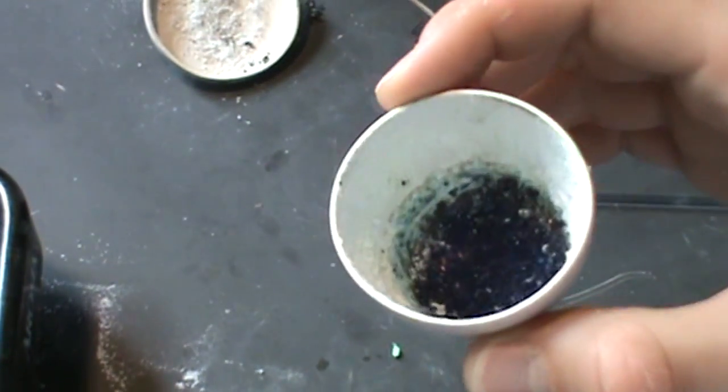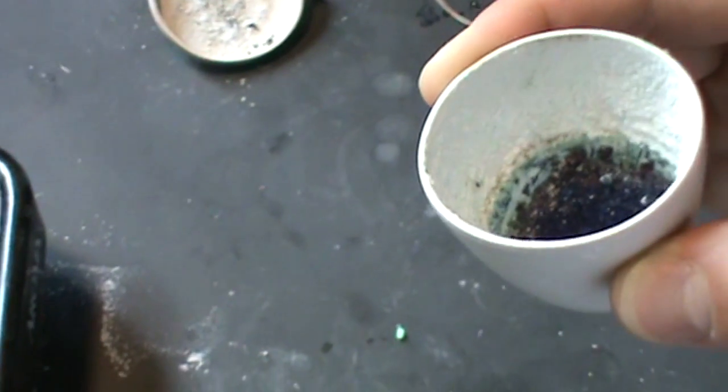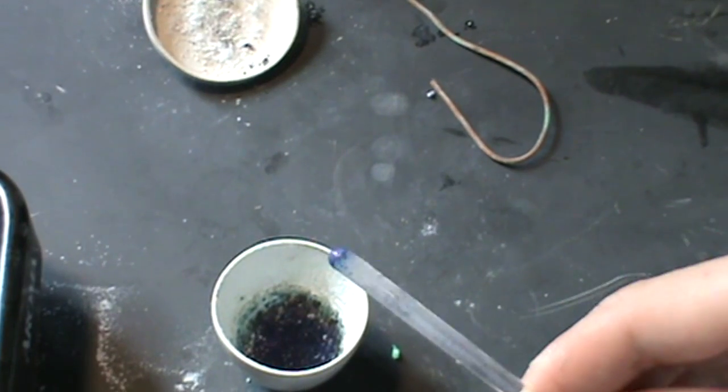After being allowed to cool, the crucible is opened. A small amount of sublime phthalimide crystals are removed from the top, and underneath there is a dark blue glassy melted mixture.